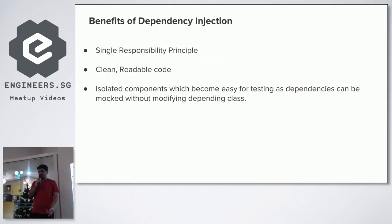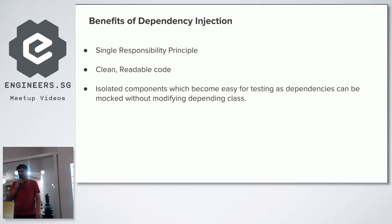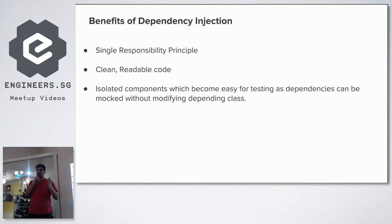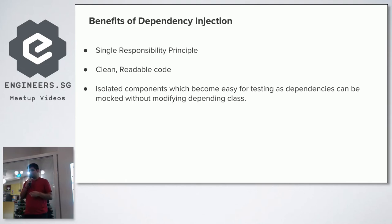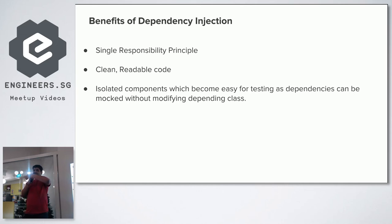The benefits of using dependency injection include: Single Responsibility Principle — Employee does not need to know how to create an instance of Address; Address and Employee are completely loosely coupled. Other benefits include clean, readable code and isolated components that are easy to test, since dependencies are loosely coupled. If you want to test something related to Address, you can simply pass another instance and test it easily.